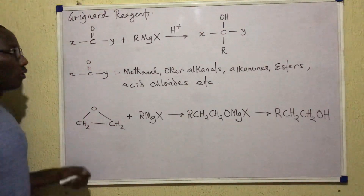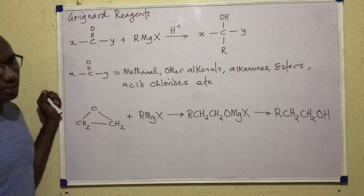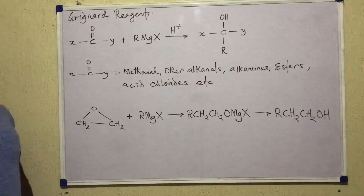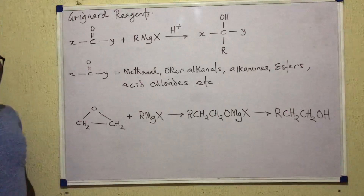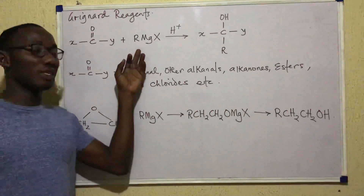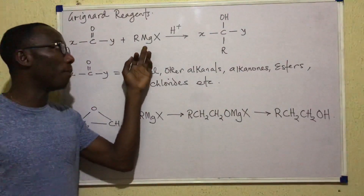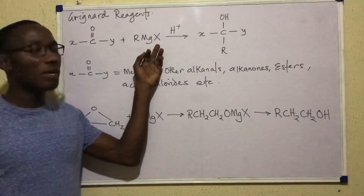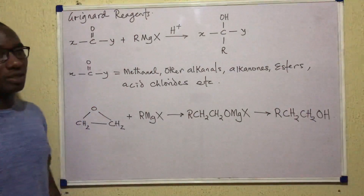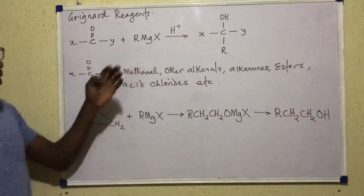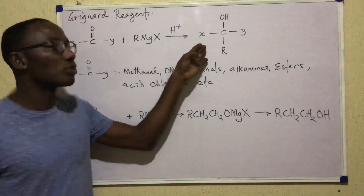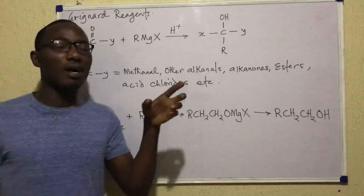Now, to prepare alcohols from Grignard reagents. First, what are Grignard reagents? We talked about this in an earlier video on alkanes. A Grignard reagent is an alkyl magnesium halide. These alkyl magnesium halides can be used to prepare alcohols of different types.